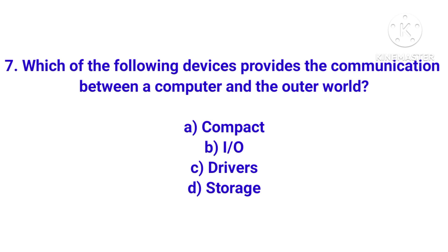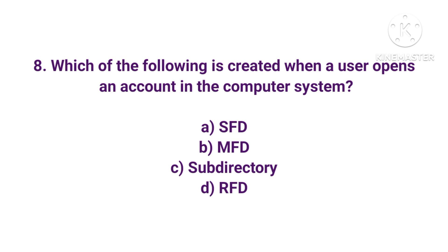Next: which of the following devices provides communication between a computer and the outer world? Options include input/output devices, drivers, storage, and compact drivers. Storage is used for storing information, so you can eliminate that. The correct answer is option B — input/output devices.